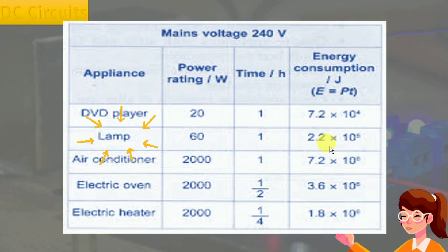Air conditioner operates at 2000 watts for one hour and consumes 7.2 times 10 to the power 6 joules of energy. Electric oven also operates at 2000 watts for 15 minutes and consumes 3.6 times 10 to the power 6 joules of energy.